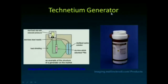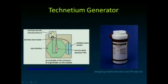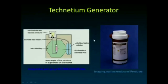Technetium can be obtained quite readily using a molybdenum generator. Alumina is loaded with molybdenum, and as the molybdenum decays to technetium, the technetium becomes water-soluble. A sterilized saline solution is connected through a column via tubing, and when an evacuated vial is placed on the needle at the top, it draws the fluid past the column, pulling off the soluble technetium. Ideally, you end up with technetium in your vial and a very minimal amount of molybdenum breakthrough.